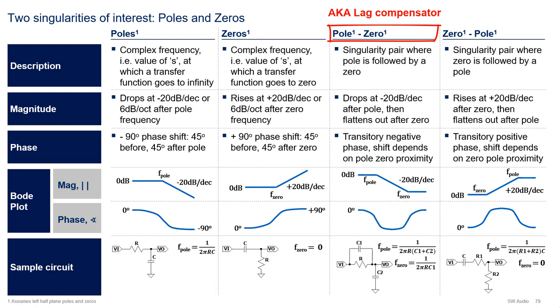A pole zero is a singularity pair where a pole is followed by a zero. In this case, the magnitude drops at -20 dB per decade after the pole, and then flattens out after the zero. The phase will exhibit a transitory negative phase shift, which depends on the pole zero proximity, as shown in the sample Bode plot.